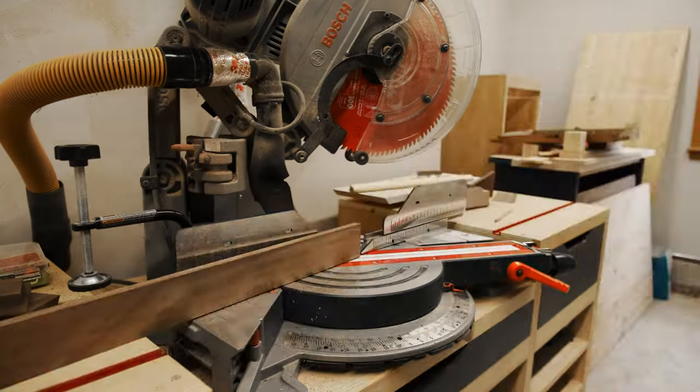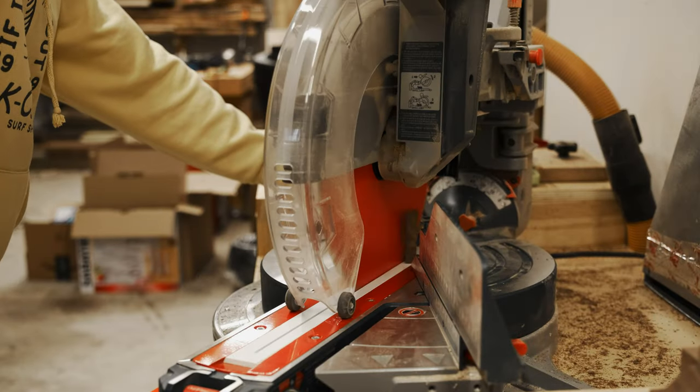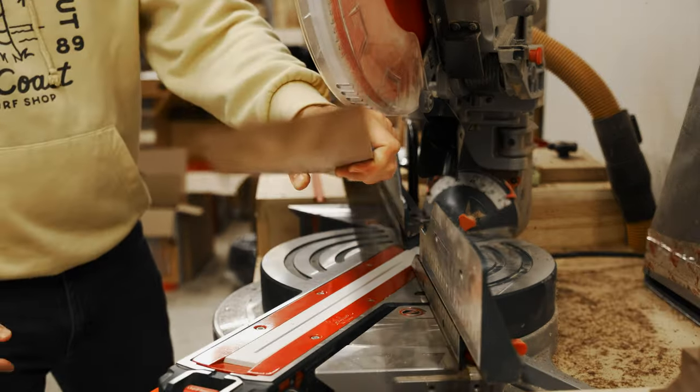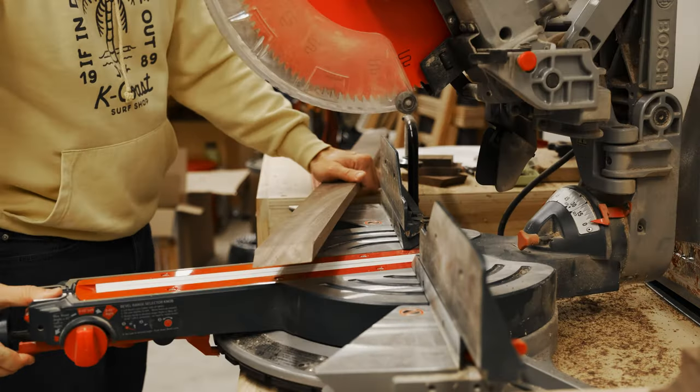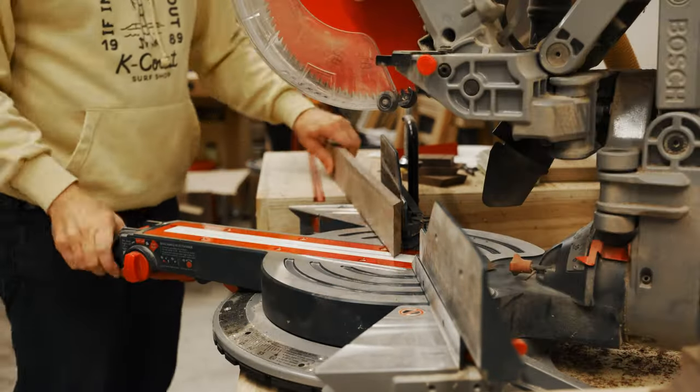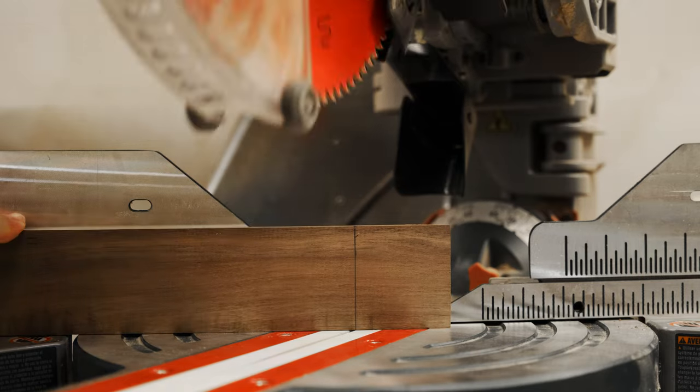Turn it on its side and cut it to 60 degrees. This is gonna set the angle for a nice reclined, comfortable controller backrest. Massage feature sold separately. Mark it off at two and a quarter inches, and we're gonna turn it to 31 and a half degrees and make the chop.